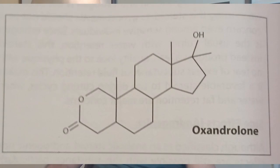Oxandrolone is an oral anabolic steroid that was identified in 1962. It is a dihydrotestosterone derivative that has been sold for about 60 years. If we look at its chemical structure, it is alkylated at the 17th carbon, so it is a known liver toxic anabolic agent.